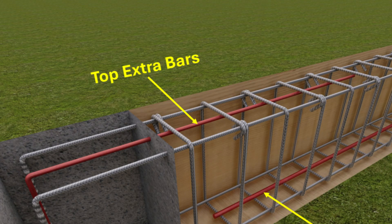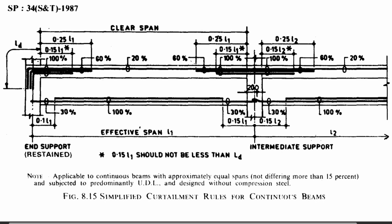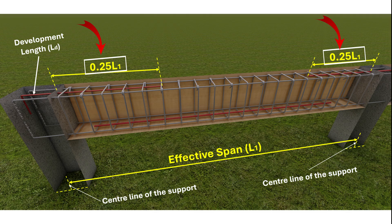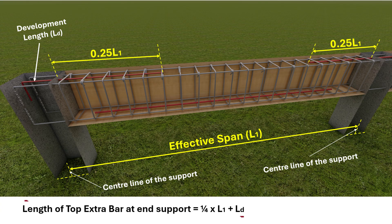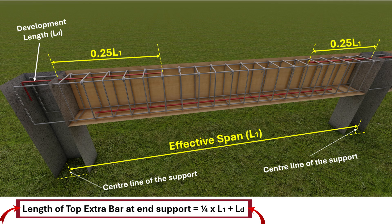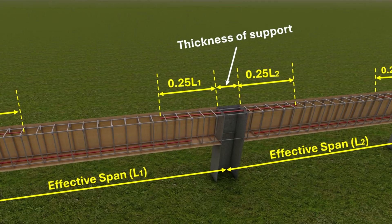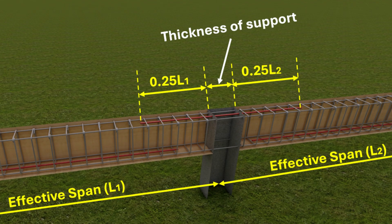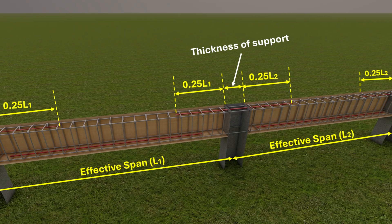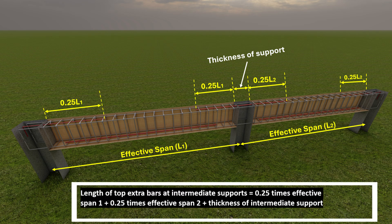For top extra bars near the supports, SP34 recommends extending the bars beyond the supports by a distance of 0.25 times the effective span of the beam. This way the length of top extra bars at the end supports will be 1/4 times the effective span plus development length. And at the intermediate supports, you will need to extend these bars into the adjacent span to ensure that they cover the critical zone effectively. The length of top extra bars at intermediate supports will be 1/4 times effective span 1 plus 1/4 times effective span 2 plus thickness of intermediate support.